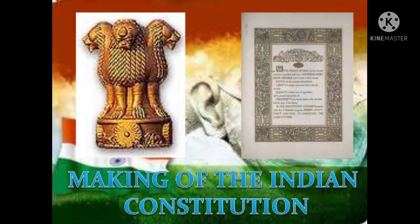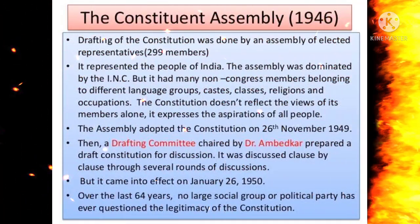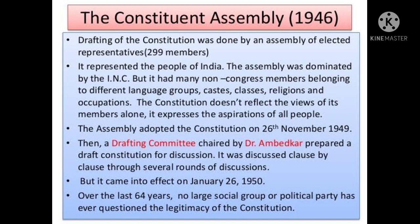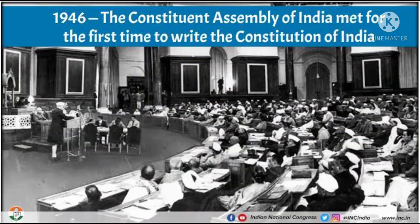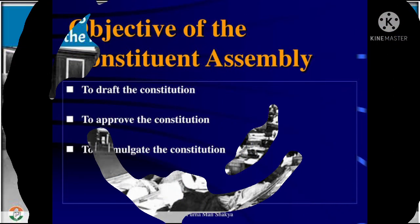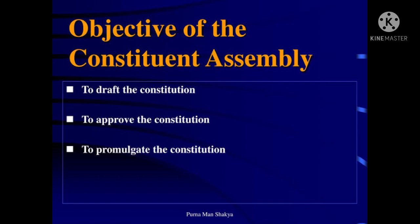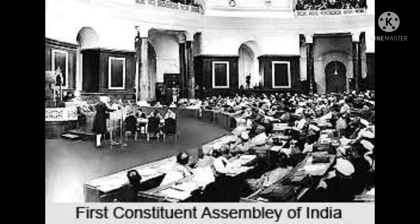Making of the Constitution: The cabinet mission that came to India in 1946 made certain proposals to constitute a constituent assembly. The constituent assembly of India was a body of elected representatives that was given the responsibility of framing the constitution of India. The members of the constituent assembly were chosen from different parts of the country to ensure proper representation of different regions.